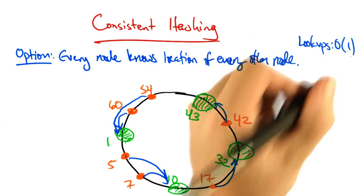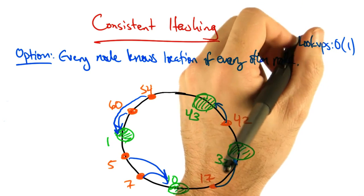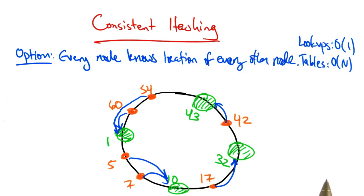In this case, lookups are fast. In fact, they're order one. But the routing tables are large, in particular, because every node needs to know the location of every other node in the network. The routing table must be order n, where n is the number of nodes in the network.